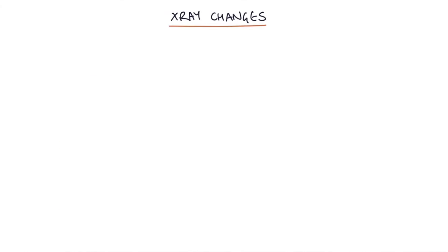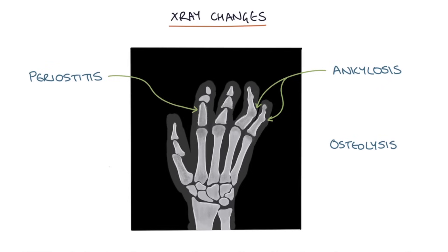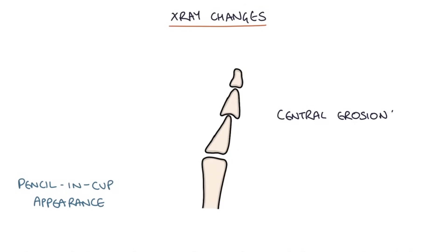The x-ray changes in psoriatic arthritis include: periostitis, where inflammation of the periosteum causes a thickened and irregular outline of the bone; ankylosis, where bones fuse together causing joint stiffening; osteolysis, which is destruction of the bone; dactylitis, appearing on x-ray as soft tissue swelling of the entire finger or toe; and the classic pencil-in-cup appearance, where central erosions cause one bone to appear hollow like a cup while the adjacent bone is narrow and sits inside it.